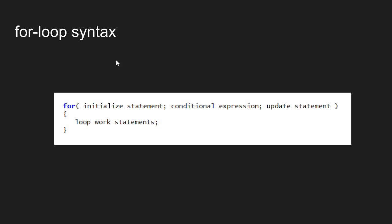The way we flow through a for-loop: when we encounter a for-loop, first we do the initialize statement. Second, we test the condition. If the condition is true, we execute all of the statements in the loop body — that's step three. And then number four, we jump out of the loop body and come back and do the update statement.